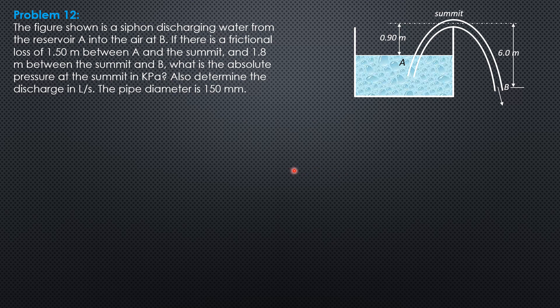So first, we write energy equation between A on the surface of this reservoir and B, which is discharging into the air. We select the datum through B so that the elevation head at A would be 6 minus 0.9, so 5.1. Velocity head at A, 0, pressure head at A, 0, elevation head 5.1,